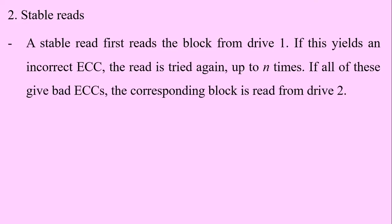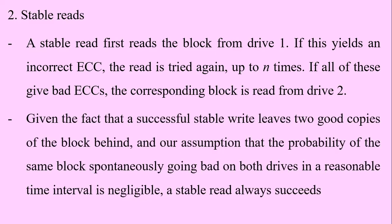Number two is stable reads. A stable read first reads the block from drive one. If this yields an incorrect ECC, the read is tried again up to a number of times. If all of these give bad ECCs, the corresponding block is read from drive two. Given that a successful stable write leaves two good copies of the block behind, and that the probability of the same block simultaneously going bad on both drives within a reasonable time interval is negligible, a stable read always succeeds.